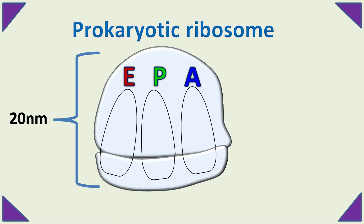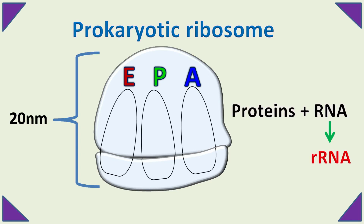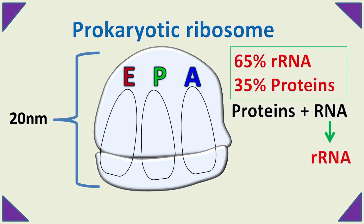The prokaryotic ribosomes are about 20 nanometers in diameter and are made up of proteins and RNA. The RNA present in the ribosome is called rRNA or ribosomal RNA. The ribosomes are made up of 65% rRNA and 35% ribosomal proteins.